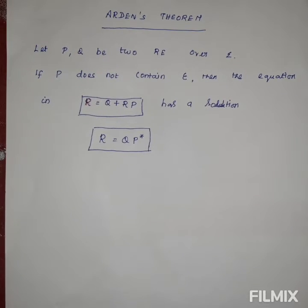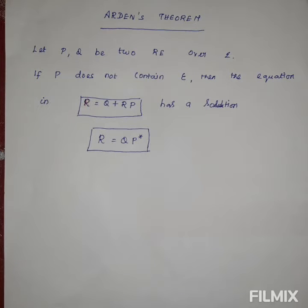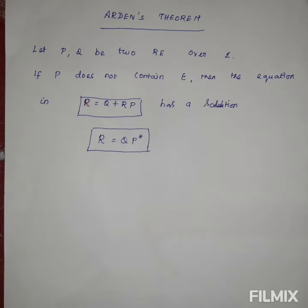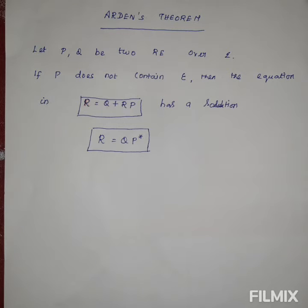In this lecture, we will see how we can construct the regular expression from the finite automata by using Arden's theorem. We already saw two techniques: one is the Rijke formula, and the second one is the state elimination technique. Now we are using Arden's theorem to convert the given finite automata into the regular expression. There are three methods in the conversion of finite automata into regular expression: the first method is the Rijke formula, the second one is the state elimination technique.